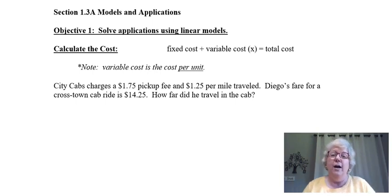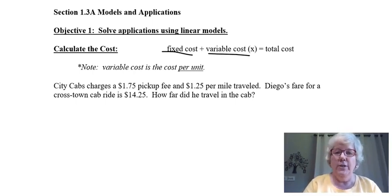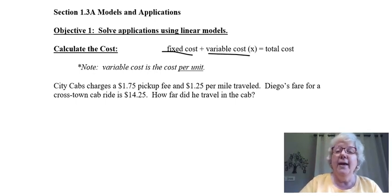This first one is how to calculate the basic cost when you are given a fixed cost and a variable cost. The fixed cost is a cost that you have to pay no matter what, and the variable cost means the more miles you travel or the more bags of potato chips you buy, the more you have to pay. The variable cost is actually the cost per unit, so the word per is important to look for.